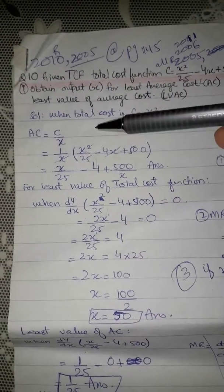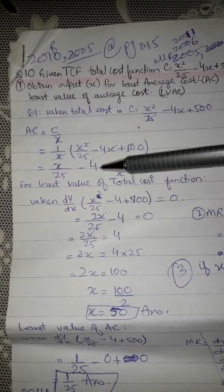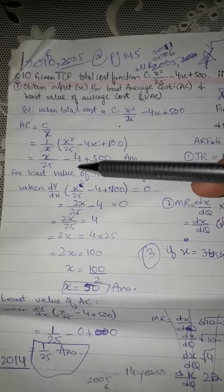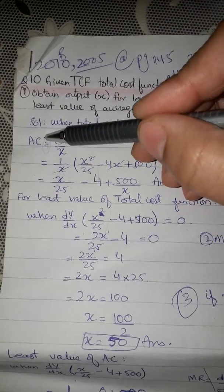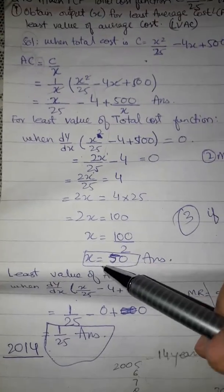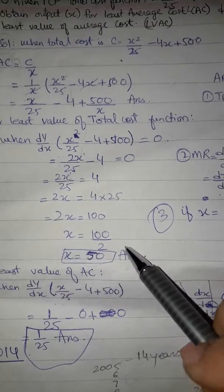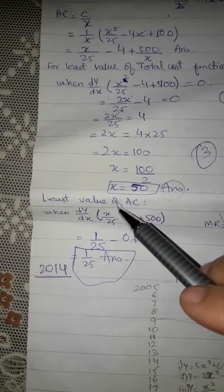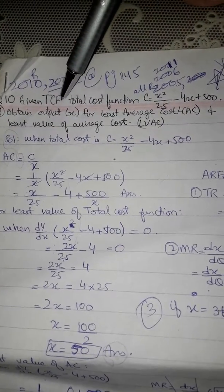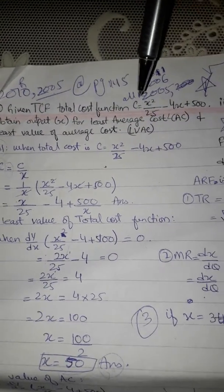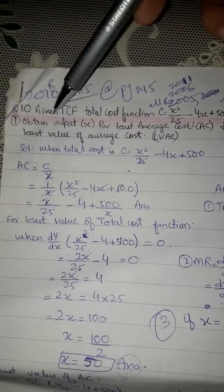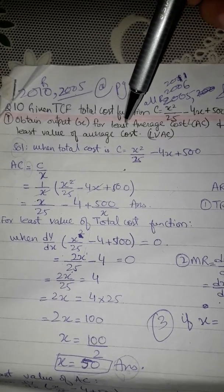The solution is about 12 to 30 steps — make sure you show your steps. Write the solution with AC equals sign, box your final answer. The least value of AC (average cost) is given where TC (total cost function) equals cx² ÷ 25 minus 4x plus 500. Find the output x for the least average cost.